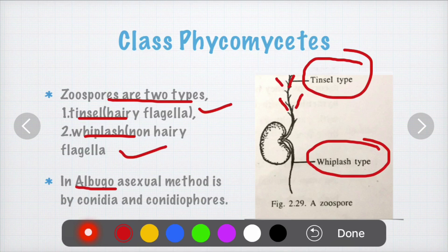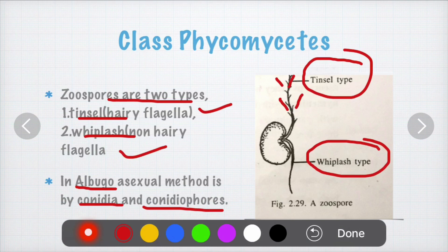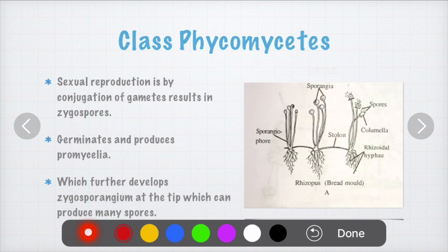In the case of Albugo, one type of Phycomycetes fungi, the asexual method of reproduction is by conidia and conidiospores. Sexual reproduction is by conjugation of two gametes, resulting in formation of zygospores.